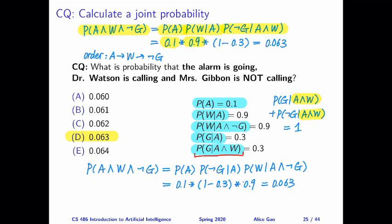One possibility is that G is true, and the other possibility is that G is false. So if we add up these two probabilities, they must sum to 1.